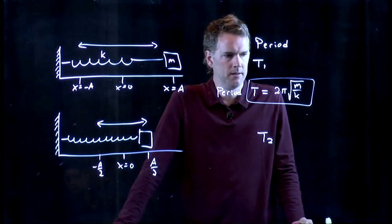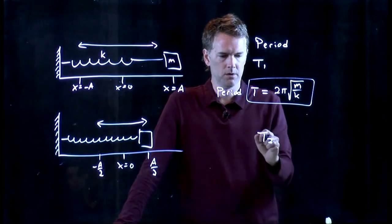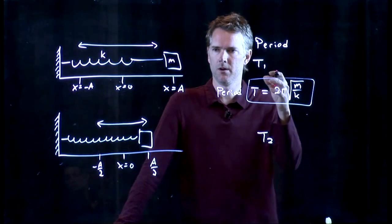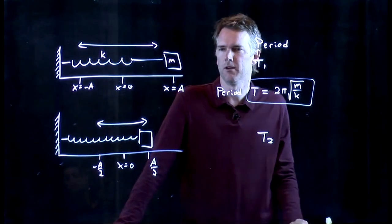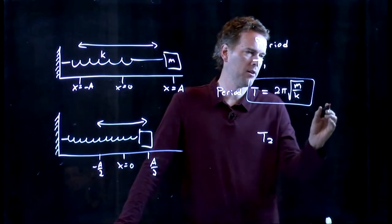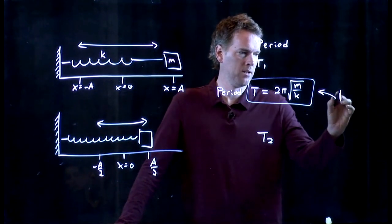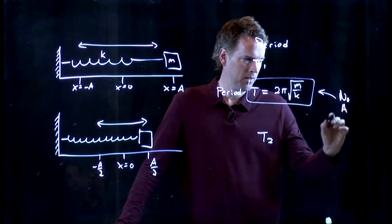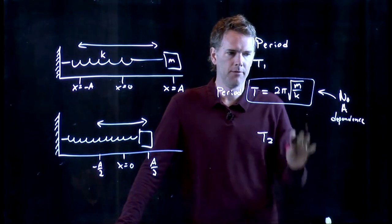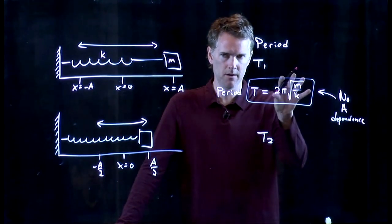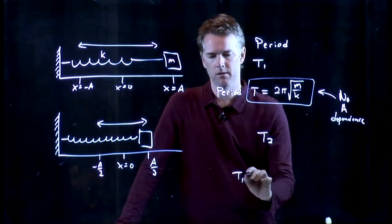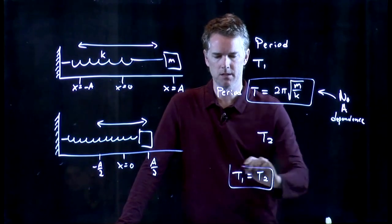So what do you think, Dan? Is T2 still going to be half of T1, or is T2 going to be twice T1, or four times, or something else? What do you think? It'd be the same. It'd be exactly the same, right? There is no A in there. There's no amplitude dependence. And if there's no amplitude dependence in there, then the period is in fact exactly the same. So T1 is in fact equal to T2.